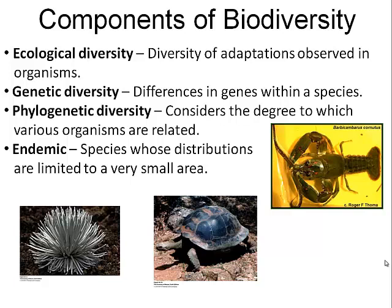We also want to mention the term endemic. An endemic organism is one whose distribution is limited to a very small area. One example on the screen is the crayfish Barbicanbaris cornutus, an interesting endemic species found here in Kentucky. This species is endemic to the Barren River system, just southwest of Bowling Green. It's a huge crayfish — up to seven inches long — with little hair on its antennae, found only in that couple-county area and nowhere else on the face of the earth.